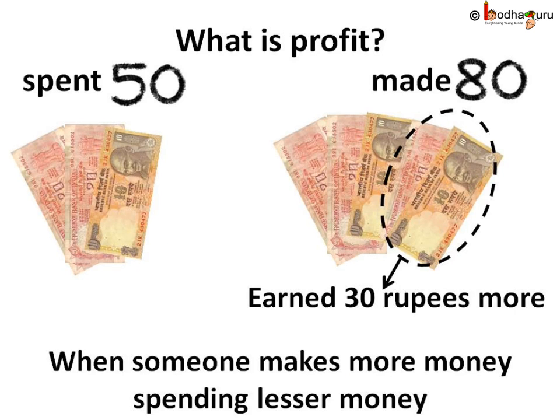So what is this profit? When a businessman makes more money by spending less money, we can say he has made profit. Like in the case of Rahim, he spent 50 rupees but he made 80 rupees. So he earned 30 rupees, which is his profit.